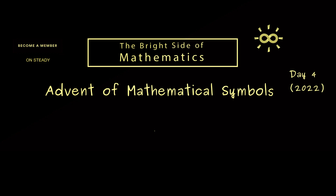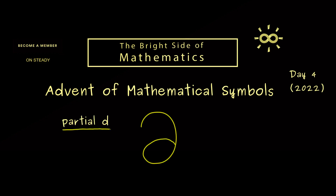Hello and welcome back to the next mathematical symbol, which is today this partial d. I just call it partial d, but there are a lot of other names for this cursive d. It's important to see that it is not a lowercase delta. Of course it's related, because it should look like a rounded version of a lowercase d. Some people just call this symbol del, but this can be confused with the Nabla operator. Therefore, if you pronounce this letter, you can simply say d.